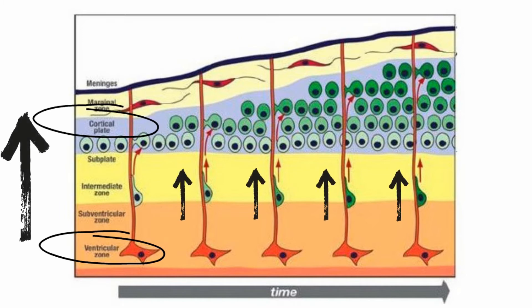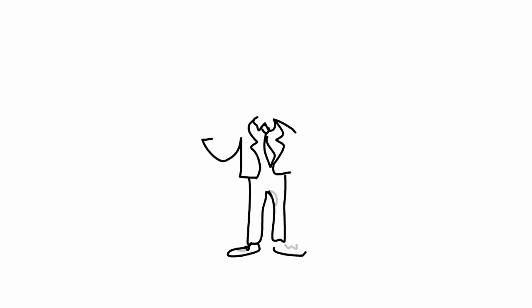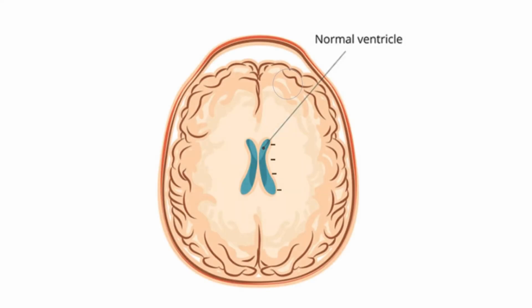But imagine a situation where some of these neurons don't go all the way and just stop their migration before reaching the final destination. In this situation, you will have a set of neurons that have reached the outer layer and properly form the cortex. But at the same time, there are another set of neurons that don't reach that outer layer and form another cortex below the outer one. This exactly is double cortex syndrome.